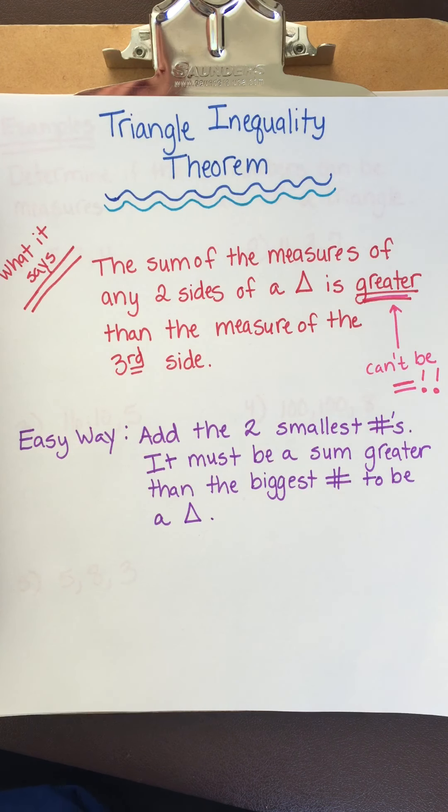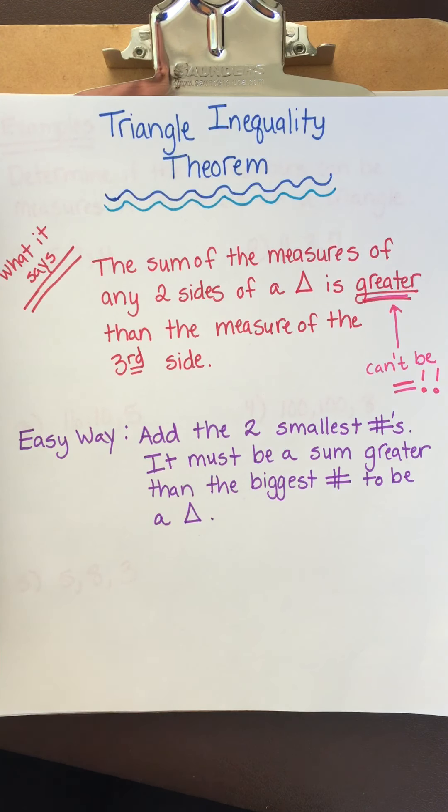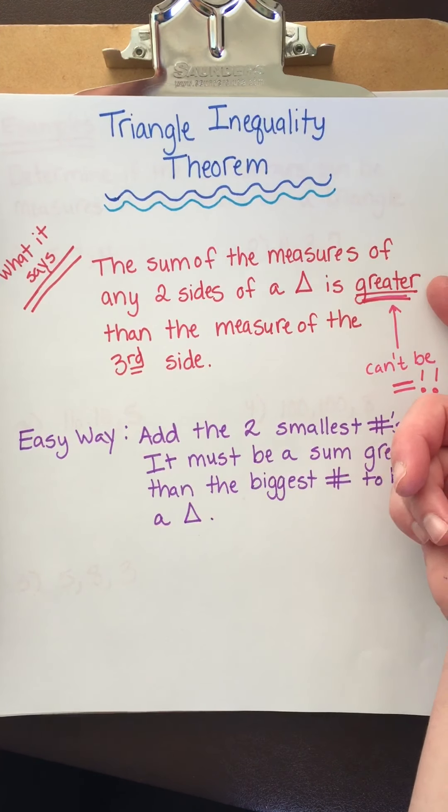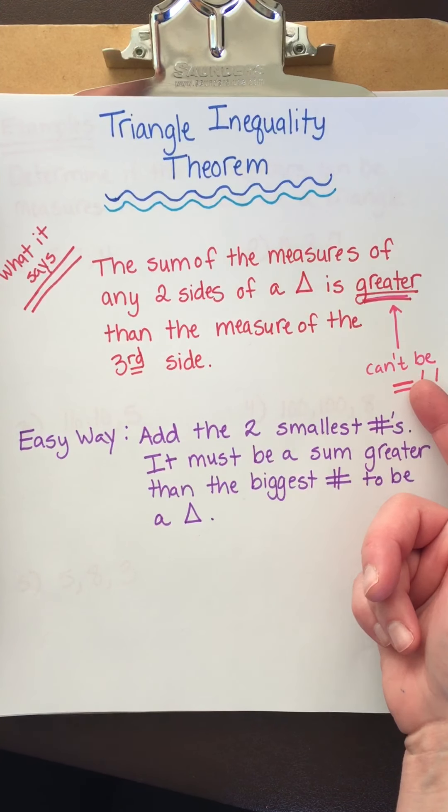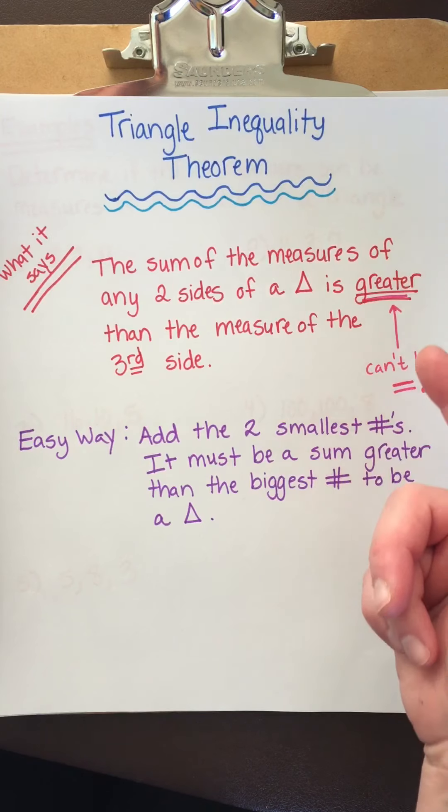Howdy, y'all. Today we're going to talk about the triangle inequality theorem. And basically what it says is the sum of the measures of any two sides of a triangle is greater than the measure of the third side. And it has to be greater. They cannot be equal. Greater. Not equal.